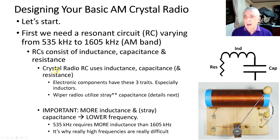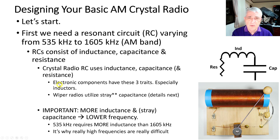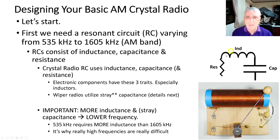The crystal radio resonant circuit uses inductance, capacitance, and leftover resistance. All electronic components have these three traits — you're not going to get away from it. An inductor is the worst because it has significant levels of resistance and capacitance on top of the inductance. Wiper radios use stray capacitance, which we'll talk about next.